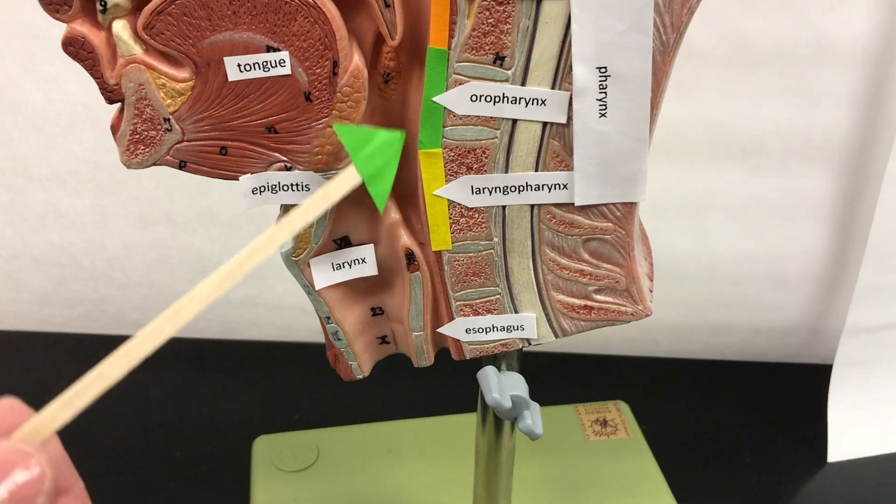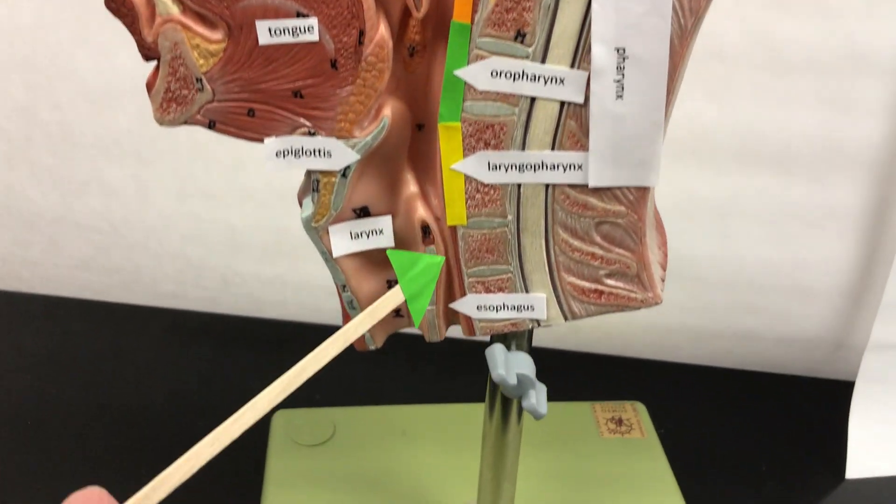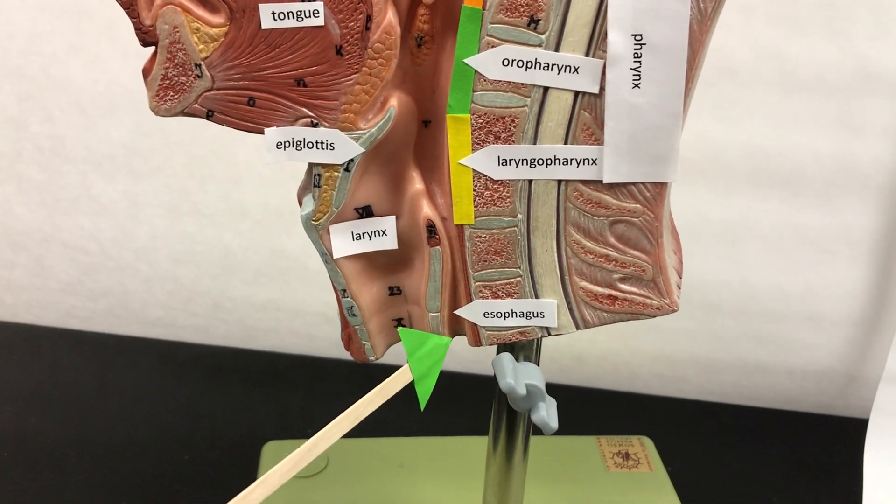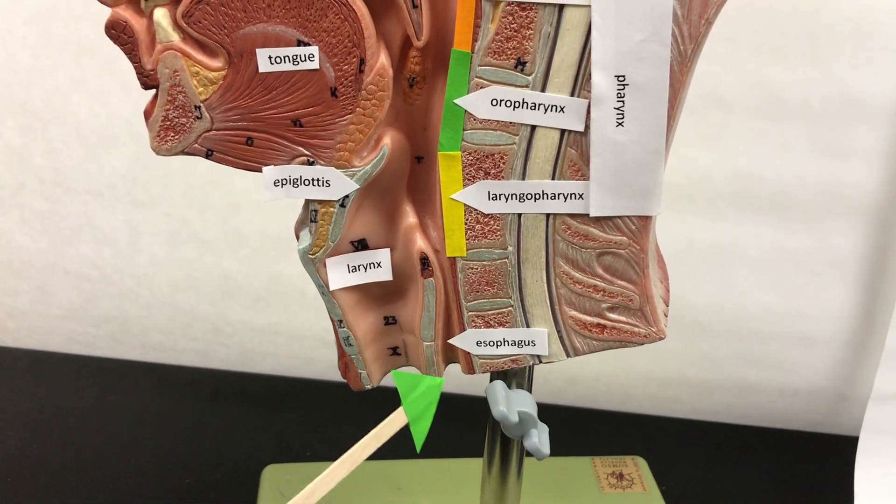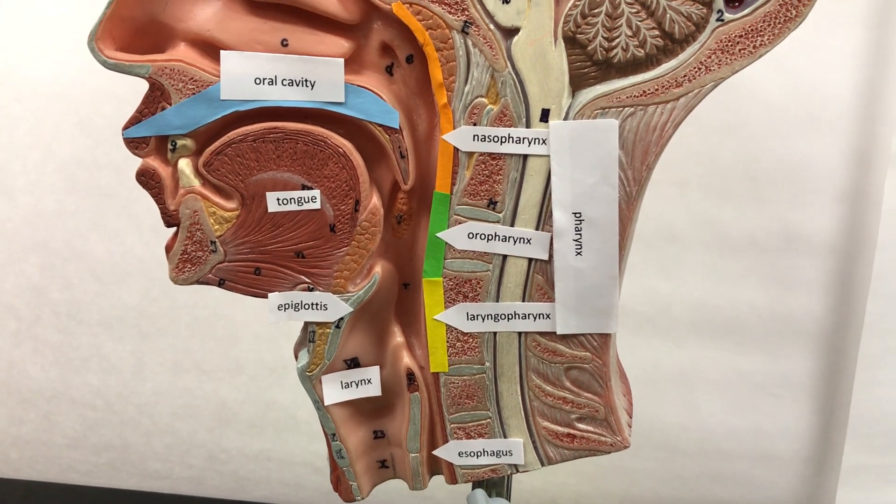The esophagus. So you chewed food and it goes down your throat to your esophagus, and your esophagus has these peristaltic waves of smooth muscle. The smooth muscle contracts and pushes that bolus to the stomach.